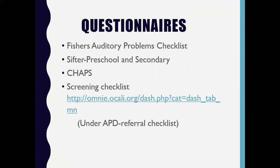The SIFTER is almost better because it has a preschool, elementary, and secondary version, typically filled out by the teacher. What I love about the SIFTER is it has categories — the teacher responds on varying degrees to sentences grouped by academics, communication, class participation, behavior, and attention. So if I do an evaluation and auditory processing skills are normal but I suspect attention deficit, I can pull out the SIFTER and note that the teacher's concerns are really in the attention or class participation section, helping the family go in a different direction.